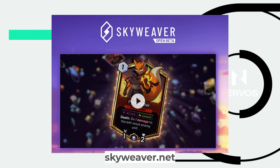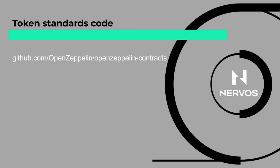An example application using the ERC1155 standard is Skyweaver, which is like Hearthstone — a card game where the cards in the actual game are represented with this ERC1155 standard. As I mentioned, go to OpenZeppelin contracts on GitHub and you'll find a lot of example implementations. It will take you maybe five or ten minutes to create your first ERC20, ERC721, or ERC1155 token. The code is very simple — just try to play with it and experiment and see what comes out of it.